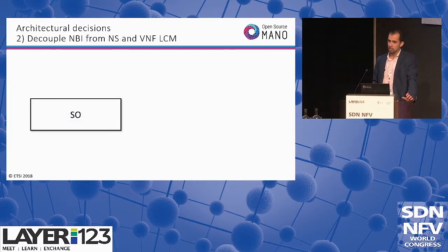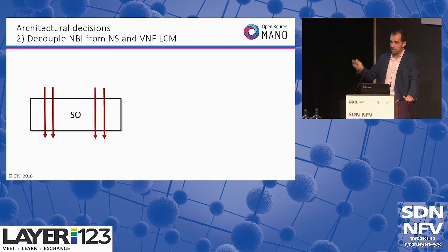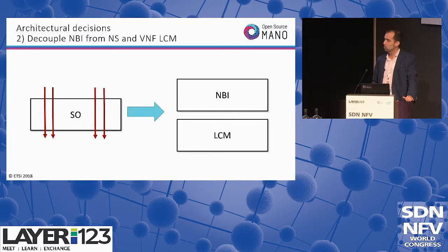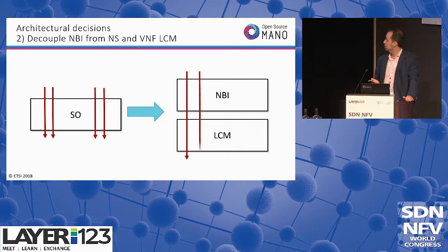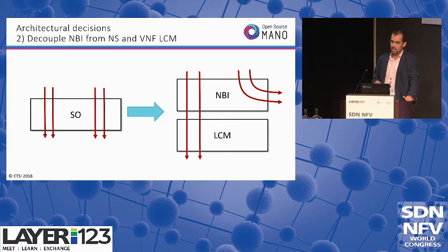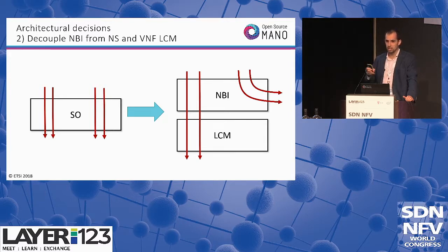The second decision, which I think is critical, is that since the SO was the component where every interaction in the system was happening, we decided to split it. Instead of making all calls go through the SO, we split it into two different modules: the NBI and the LCM. The NBI offers the northbound interface of the system, mainly a REST API for consumption, while the LCM deals with any action related to the life cycle of a network service. Some operations go from the NBI directly to other modules, or through the NBI to the LCM, depending on the operation. This makes the architecture more appropriate to scale and operate under different conditions and for different API calls.